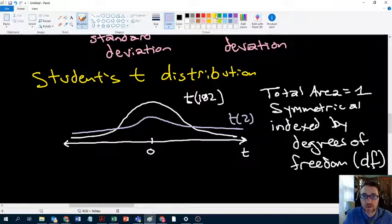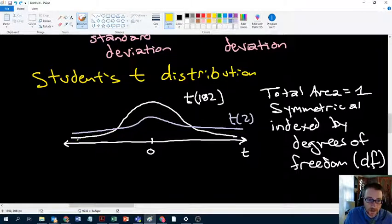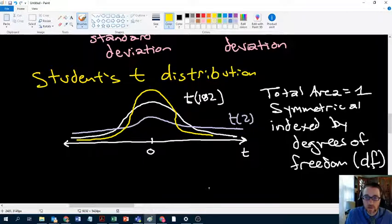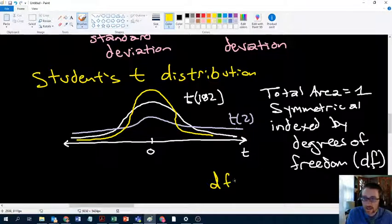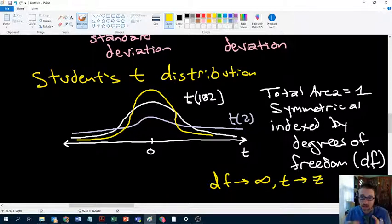And then as you get further and further along, if you get to like t equals a million degrees of freedom, not t, degrees of freedom equals a million. Eventually, as, well, another way to say this is as degrees of freedom approaches infinity, t approaches z. So it moves in that direction, right? It gets closer and closer.